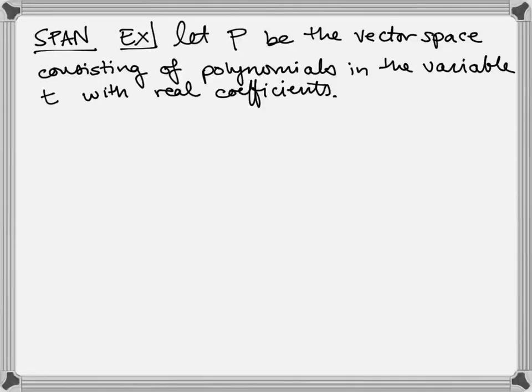Hello, linear algebra folks. I want to give you an example of a spanning set for the vector space consisting of polynomials in the variable t with real coefficients. There's no maximum degree here, and I'm considering zero to be part of my set.